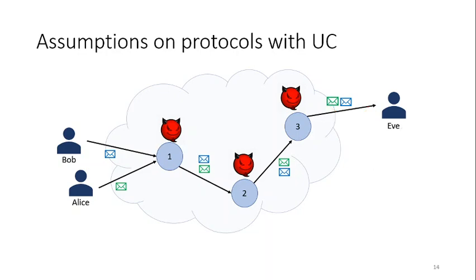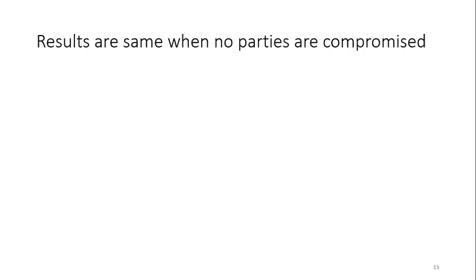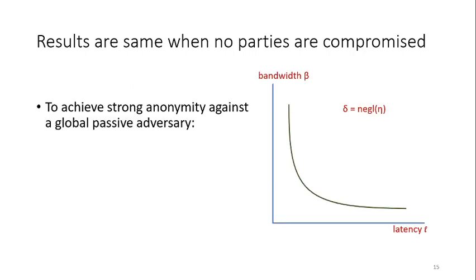We have another assumption: mixing is not possible at a compromised node. For example, if node 2 is compromised, node 2 can always map input packets to output packets. With those assumptions, we show that when no nodes are compromised, the necessary constraint for anonymity remains the same.